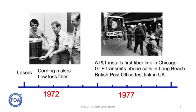A few years later, in 1977, the first field trials of fiber optic communication systems were done. AT&T installed the first fiber link in Chicago, GTE was transmitting phone calls in Long Beach, California, and the British Post Office tested a link in the UK. That's really where the beginning of fiber optic communications is marked.